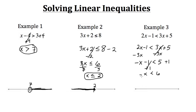Now there are a couple of ways to handle this. One option is to multiply or divide by negative 1. When we do that, we get x is greater than negative 6. Whenever you multiply or divide by a negative number, you switch the sign to face the opposite direction.